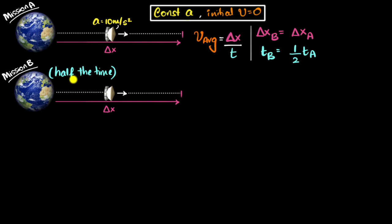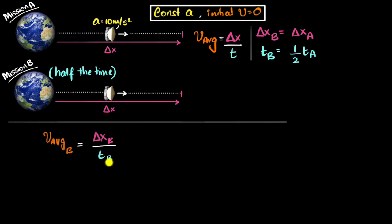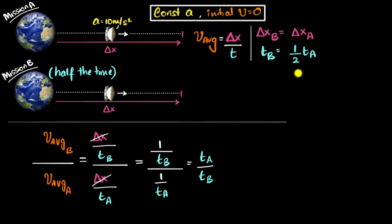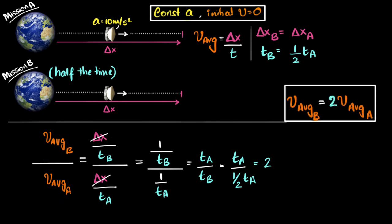The average velocity for mission B is delta X_B divided by T_B, and for mission A it's delta X_A divided by T_A. Since delta X_B and delta X_A are the same, we just call them delta X. To compare, we divide the two equations. The delta X divides out, leaving T_A divided by T_B. Since T_B is half T_A, the T_A divides out and we get 2. So the average velocity in mission B will be twice as much as in mission A.